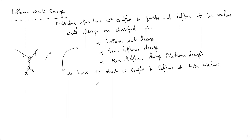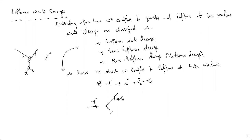The best example of a leptonic weak decay is muon decay. Muon decay is: mu-minus goes to electron plus electron neutrino plus muon neutrino. In this process, a muon decays into an electron, an electron neutrino, and a muon neutrino.